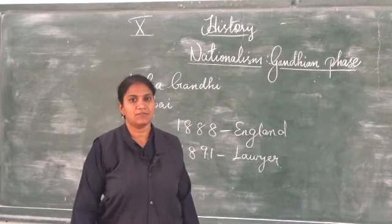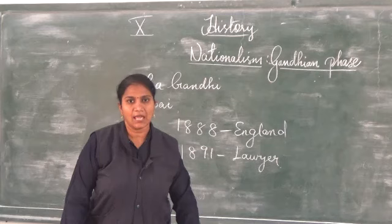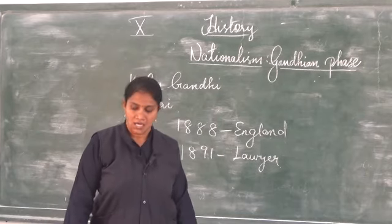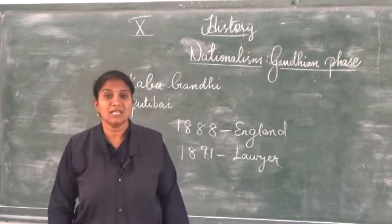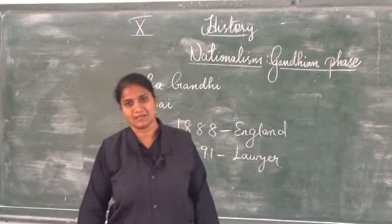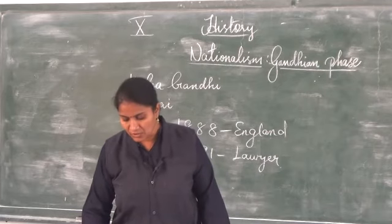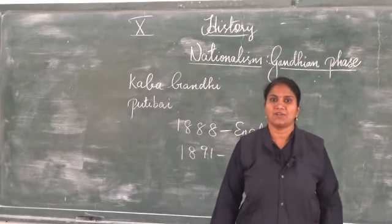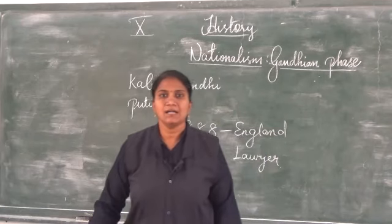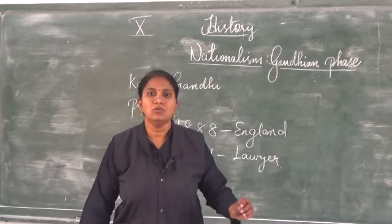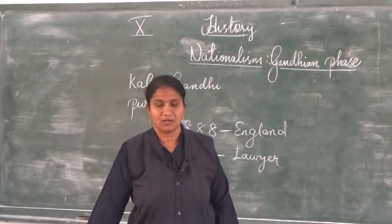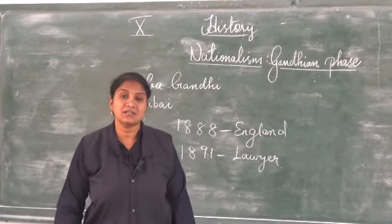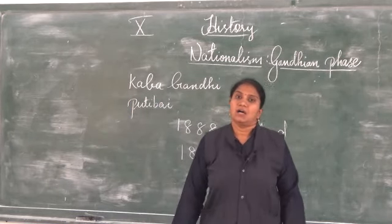He came to India much influenced by western ideas in the year 1891. On returning to India, Gandhi's attempts to practice in Bombay failed — his first attempt as a barrister was an utter failure. It was during this time that a Gujarati firm settled in South Africa sought Gandhi's help to look into their cases there. So he went to South Africa in the year 1893.